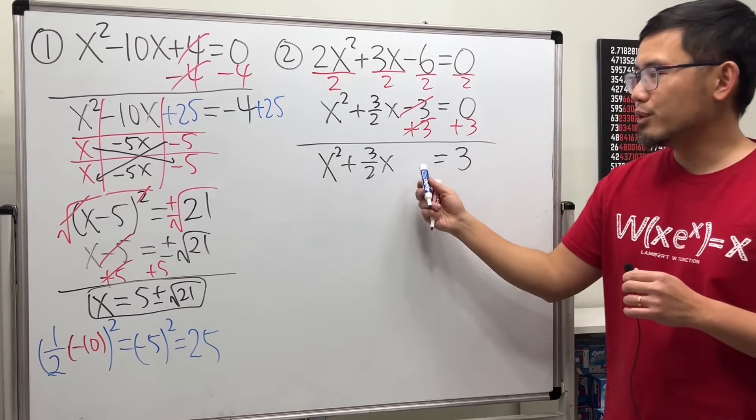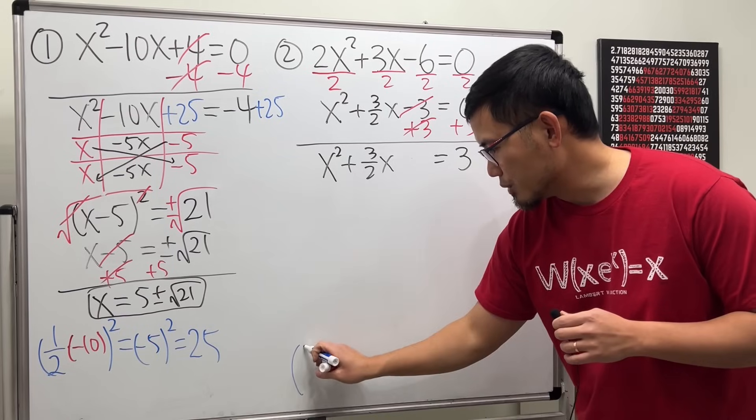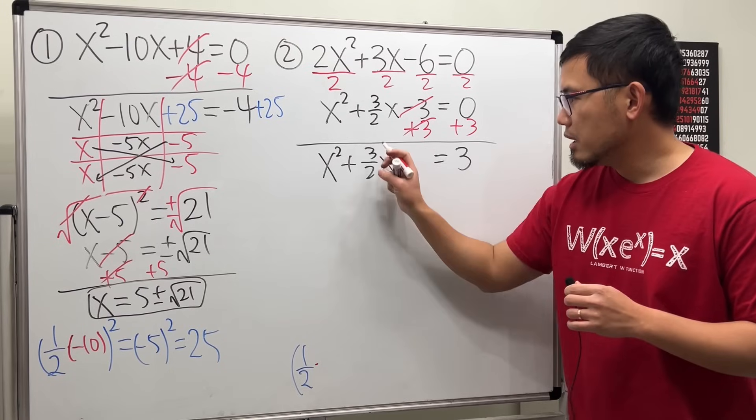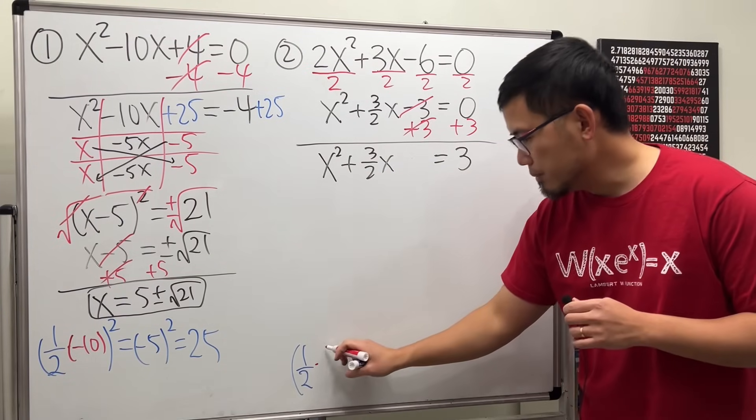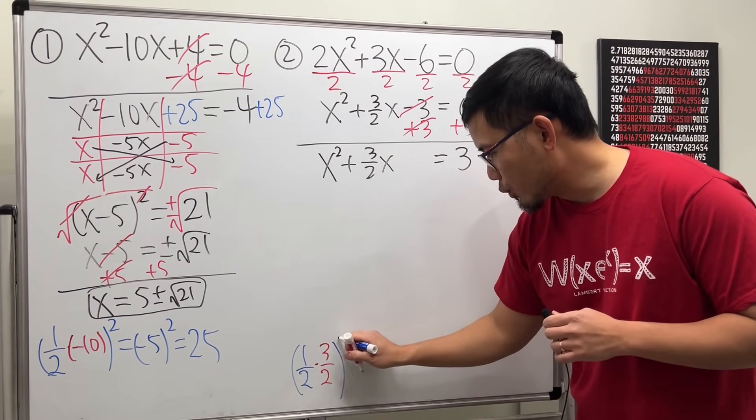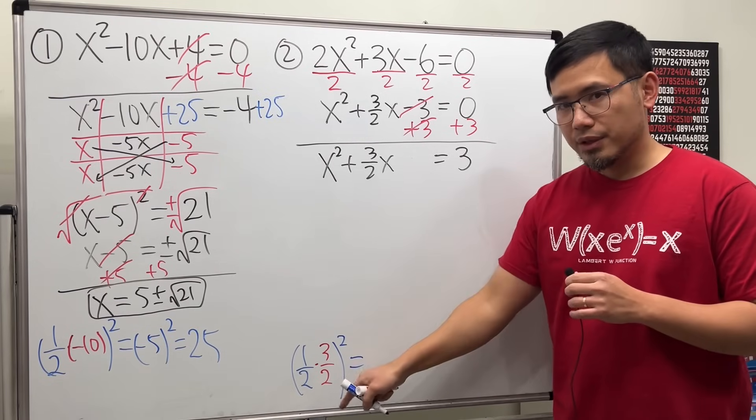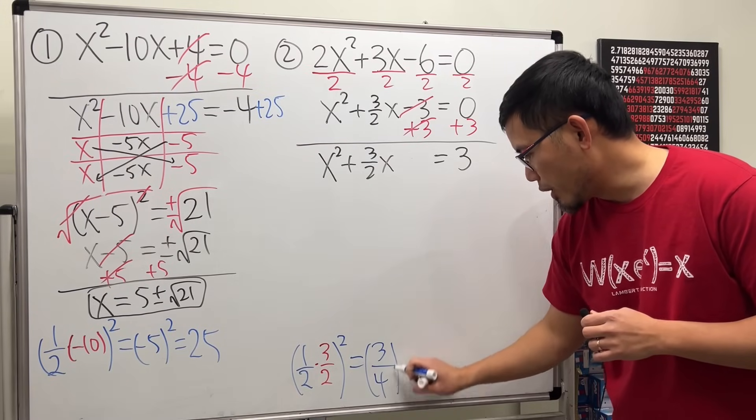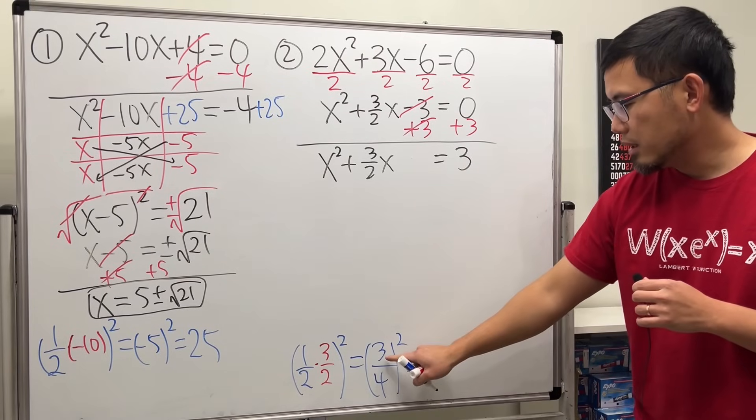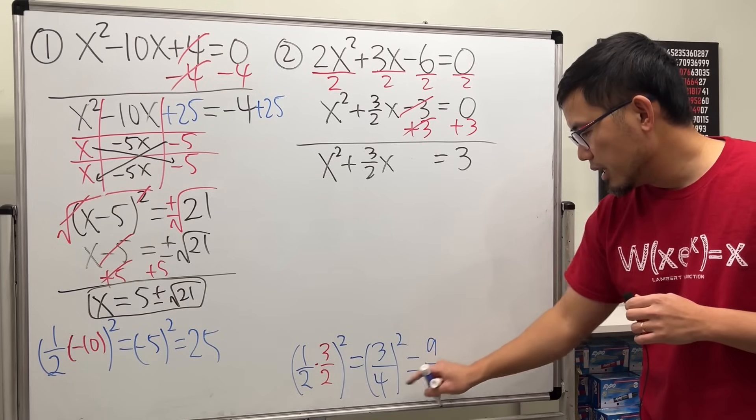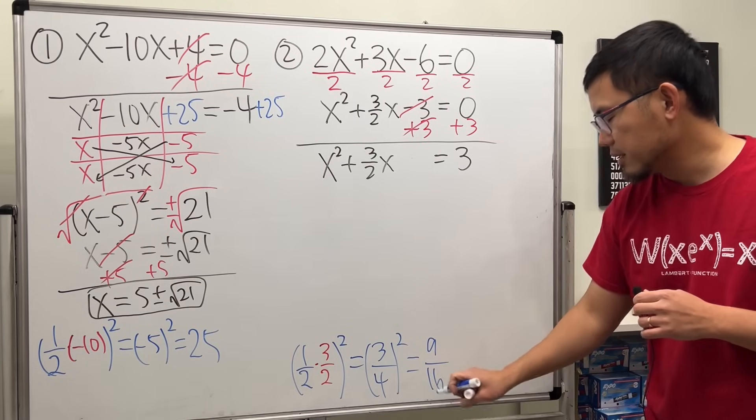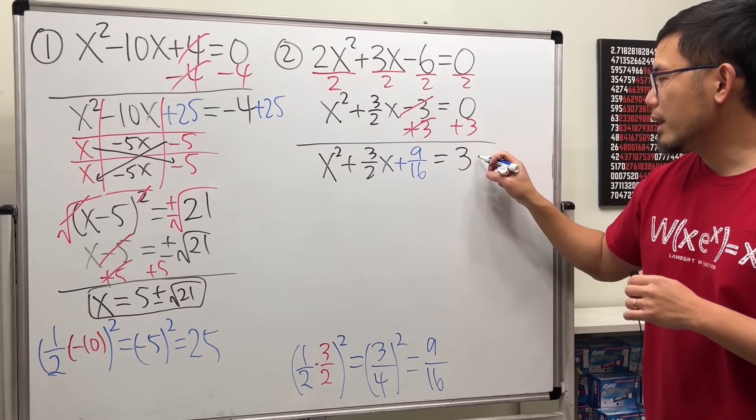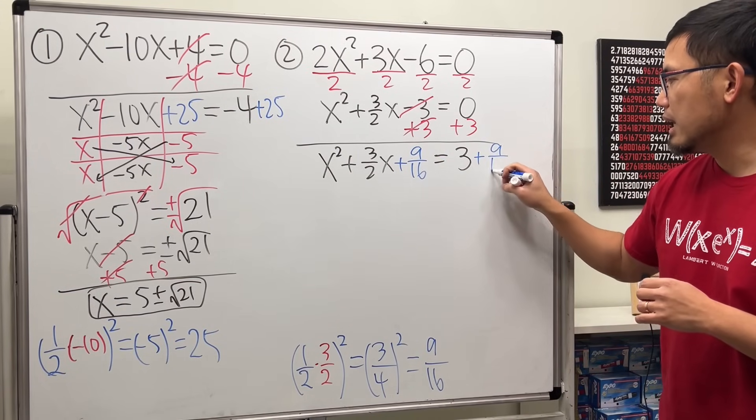Now we are going to figure out a magic number. Again, let's do it down right here. We take 1 half times this number, which is positive 3 over 2. And then squared. For the inside, 1 times 3 is 3, over 2 times 2, which is 4, and then squared. 3 over 4 squared. You just do 3 squared, which is 9, and then 4 squared, which is 16. So we come here, we add 9 over 16. Likewise, we do the same thing on the other side like that.